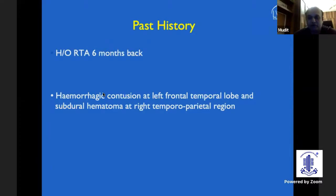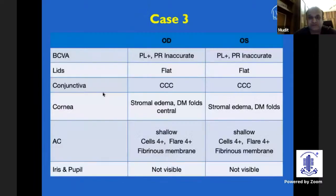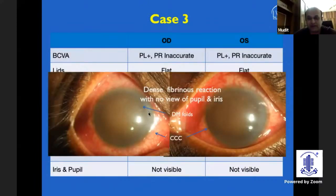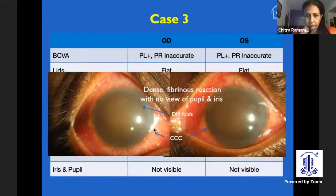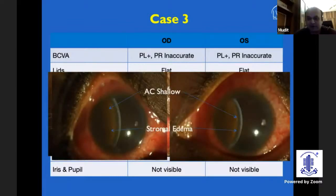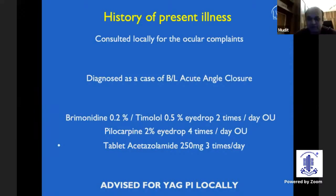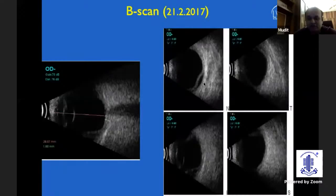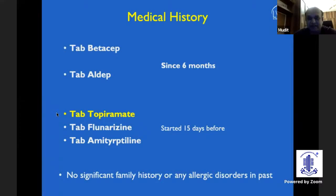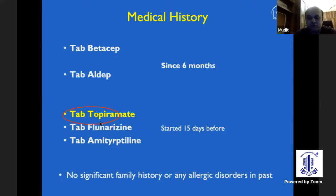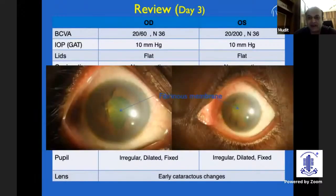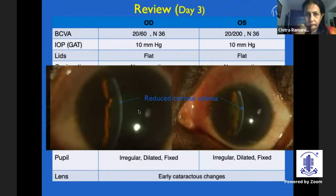Drugs can also mimic and cause inflammation, and you should have a high index of suspicion. This was a lady who came with dense fibrinous reaction in both eyes with circumciliary congestion. Vision was perception of light only in both eyes. She had a shallow AC and stromal edema, and was diagnosed as angle closure and advised for a YAG PI elsewhere. When we examined her, she had peripheral choroidal detachments in both eyes, and gave a history of using topiramate started just 15 days ago. Topiramate is notorious for causing AC inflammation as well as choroidal detachments.